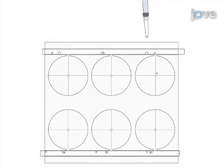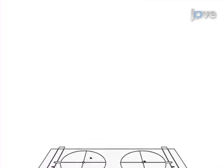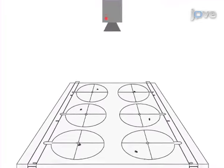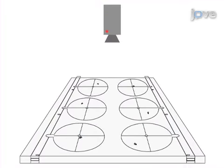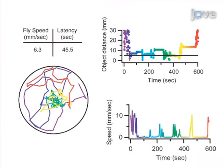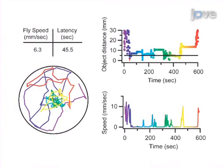Next, a computer system with a digital camera tracks the position of each fly over time and records its coordinates for later data analysis. The final step is to determine the latency of each fly to reach the odor source using custom software.